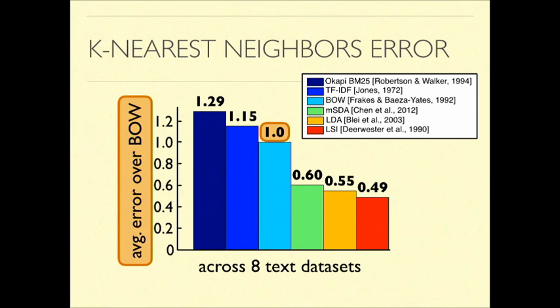I'm reporting on the y-axis the error of each of these methods when you use them for k-nearest neighbor classification. The error is with respect to the bag of words error. Importantly, the lower the better. You've better encoded similarity because your error is lower. I'm going to compare also against some classic methods like Latent Dirichlet allocation and Latent Semantic Indexing, as well as a new method called Marginalized Stacked Noise and Autoencoders, or MSDA.